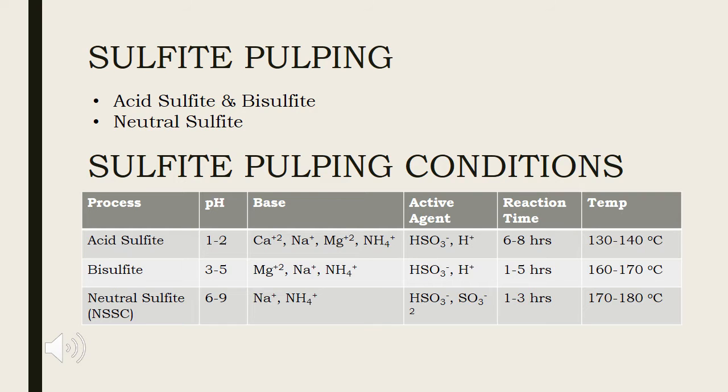The main cation used in acid sulfite pulping is calcium base and it operates in highly acidic range of pH. The other soluble cations like sodium, magnesium and ammonium help to operate sulfite cooking range above pH 2. In bisulfite pulping, magnesium cation is preferably used up to pH 5. Sodium and ammonia cation are used due to their wide range of operating pH from acidic to alkaline.